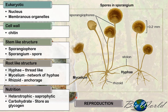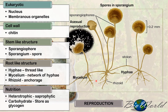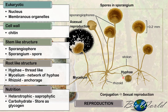In reproduction, fungi can carry out both sexual and asexual reproduction. Asexual reproduction is carried out when the sporangium ruptures to release spores, which will be carried by wind to other surfaces of the bread. In the case of sexual reproduction, the hyphae of the fungi will conjugate and exchange genetic material to form a zygote spore.